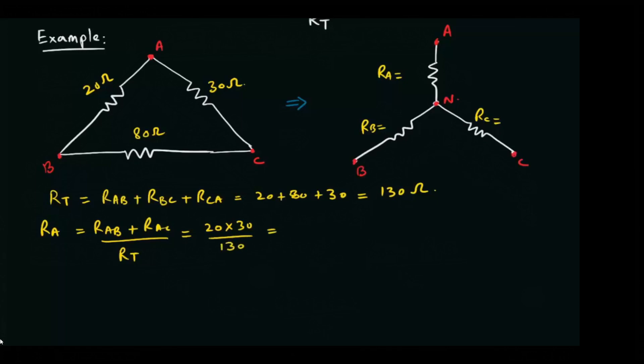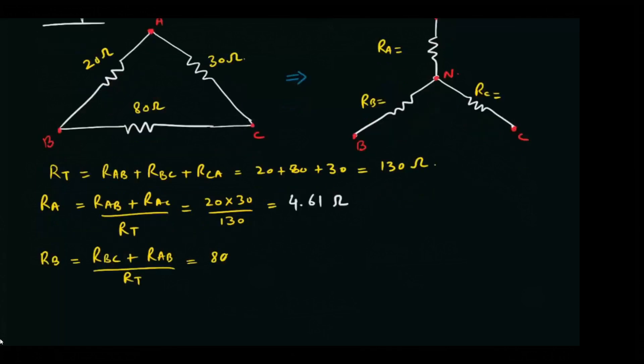RA comes out to be 4.61 ohm. RB is equal to 12.31 ohm. And RC is equal to 18.46 ohm.